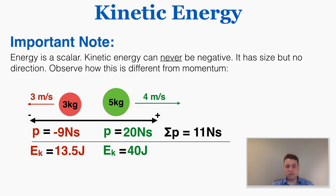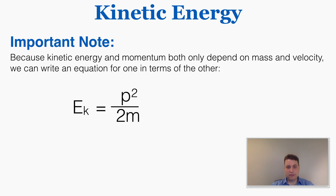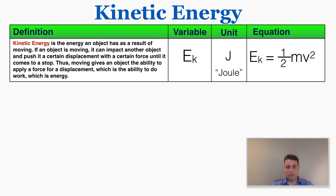So the total momentum is 11 Newton-seconds while the total kinetic energy is 53.5 joules — the momenta work against each other but the kinetic energies add together. Because kinetic energy and momentum both depend only on mass and velocity, we can write one in terms of the other: KE = p² / (2m). This is given on the IB test booklet and will be very important when discussing collisions involving both kinetic energy and momentum. That's the definition and equation for kinetic energy.